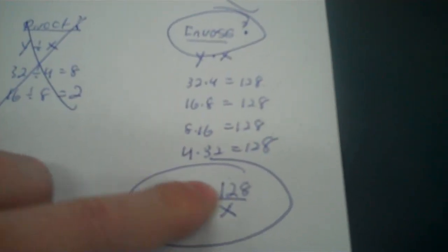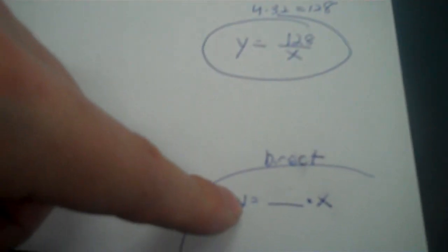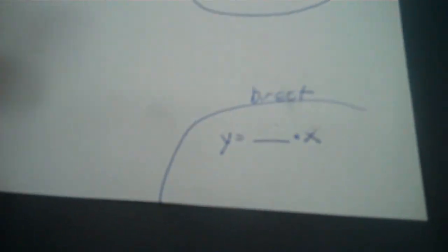Inverse means the y and the x, y is here, x is beneath it. Direct, you've got a y and then an x right across from it using multiplication.